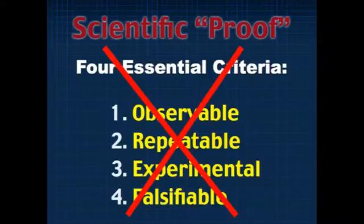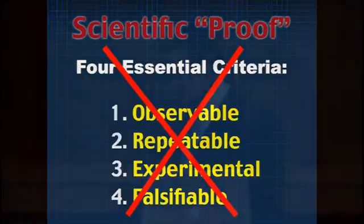It takes too long, you cannot repeat it, it is not subject to experimentation, and you cannot test it. Why say this is scientifically proved? Either you do not know what scientific proof is, or you are not telling the truth. The same objections can be made about creation — you cannot observe it, repeat it, or subject it to experimentation. But generally speaking, neither creation nor evolution is subject to absolute scientific proof. Neither meets the criteria of empirical proof.